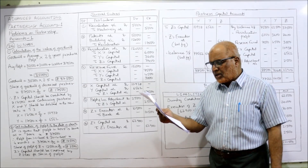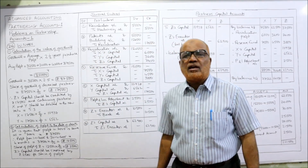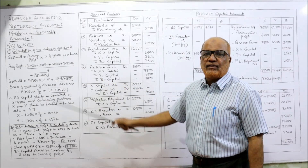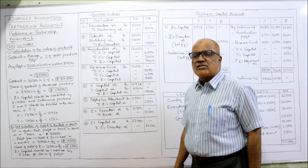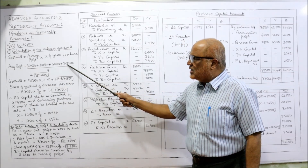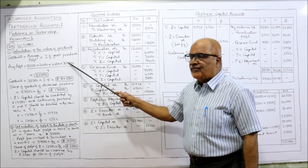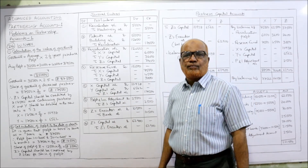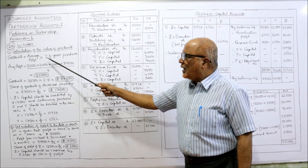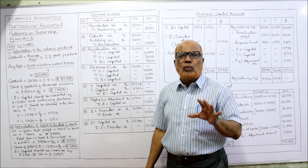First, in working note, we calculate the value of goodwill. Goodwill equals average profit multiplied by two and a half years' purchase. Average profit: total of four years' profits — 32,500 + 30,000 + 40,000 + 37,500 — divided by 4 equals 35,000. So goodwill = 35,000 × 2.5 = 87,500. This 87,500 is the total goodwill of the firm.